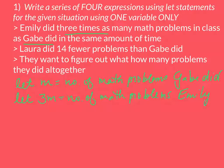And then the next thing, let's see, we have Laura did 14 fewer than Gabe. So we're still going to start with Gabe. The 14 fewer means we're going to subtract 14 from that. So we're going to have M minus 14 equal